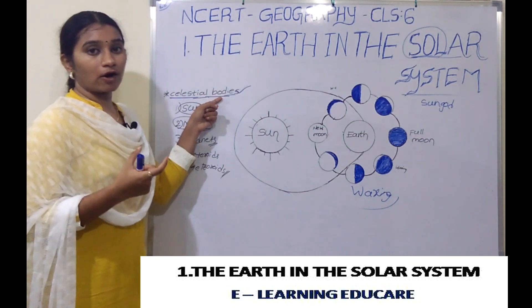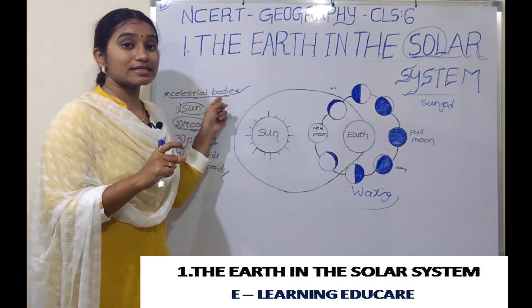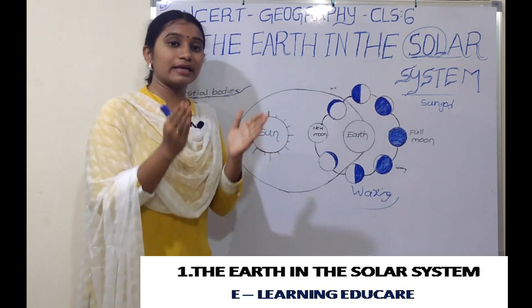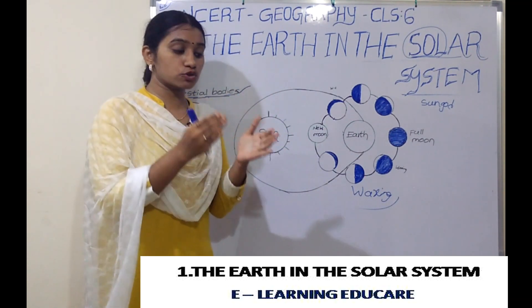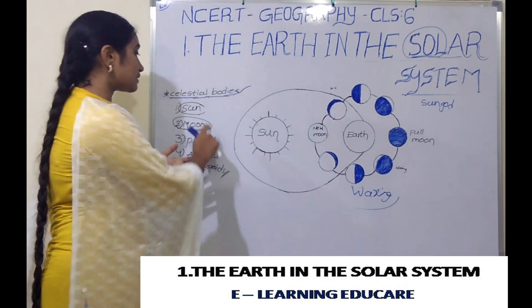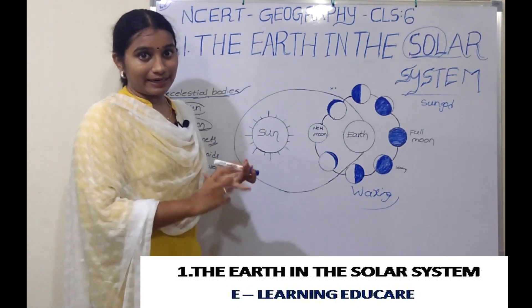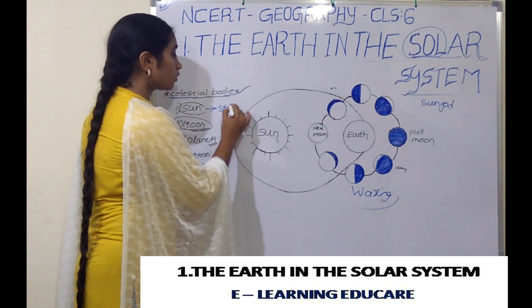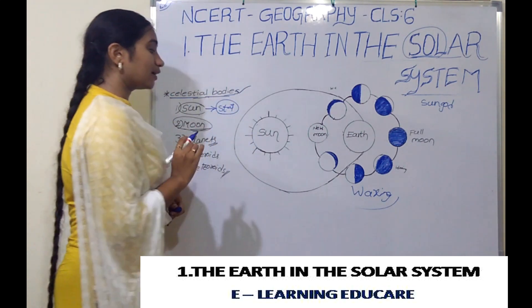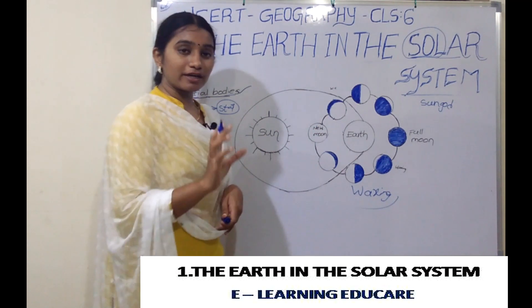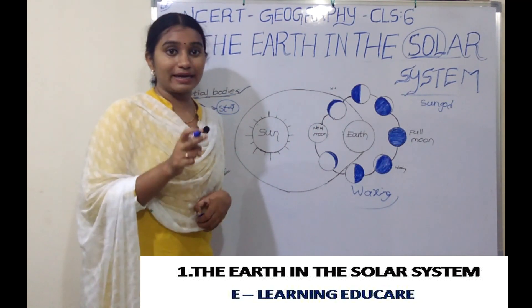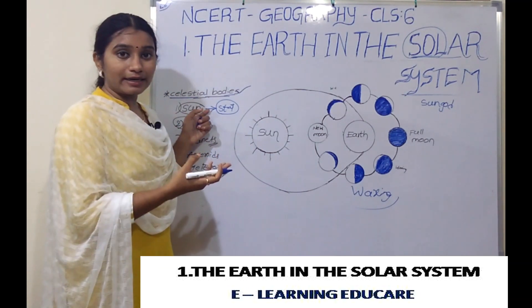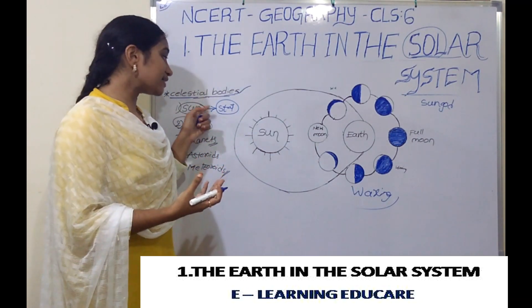Coming to some other celestial bodies — some are big and emit heat. Those which produce their own heat and are much bigger, we call them stars. The Sun emits its own light and heat, and that is why the Sun is referred to as a star. Stars emit their own light and heat, and that is why the Sun is a star.